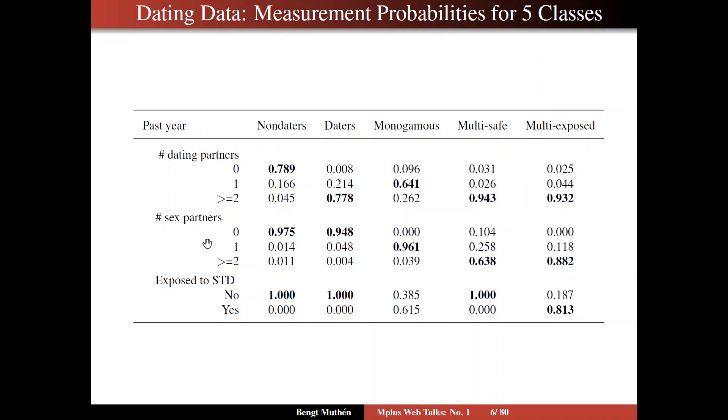The way you understand this analysis is by looking at measurement probabilities and transition probabilities. Measurement probabilities are given on this slide, where the columns correspond to five different latent classes, so that five categories of that latent class variable C. Non-daters, daters, monogamous, multi-partner safe, multi-partner exposed.